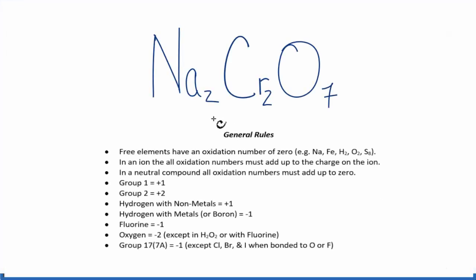In this video, we'll find the oxidation numbers for each of the elements here in Na2Cr2O7, sodium dichromate. We'll use these general rules to help us figure that out.